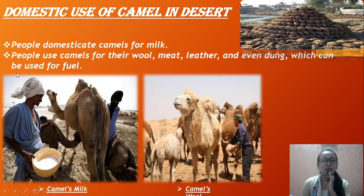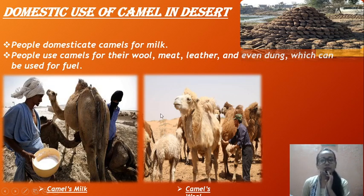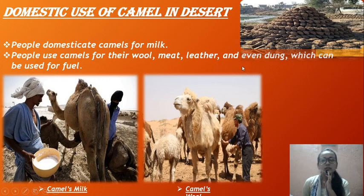People also domesticate camels for domestic use — for milk, meat, and leather. The dung, which is the waste product of the camel, is used as fuel for cooking. So camels are kept for their milk, meat, leather, and even their dung for fuel.